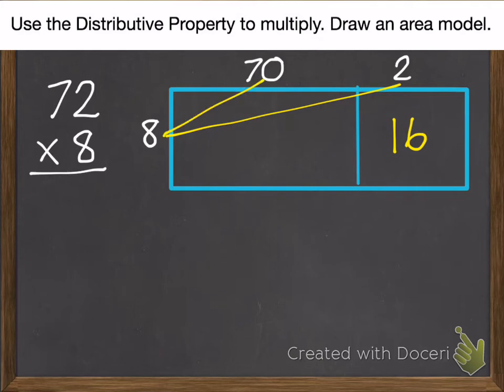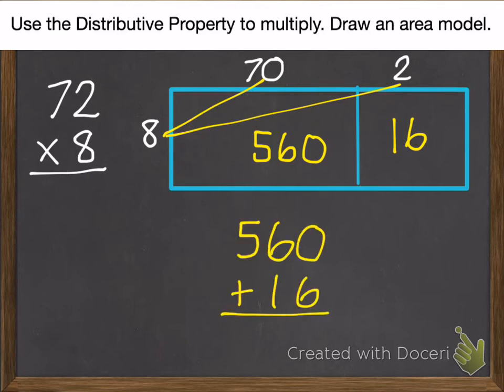Then 8 times 70. 8 times 7 is 56, plus a zero. So 560. Add those together. Zero plus 6 is 6. 6 plus 1 is 7. And 5. So 576.